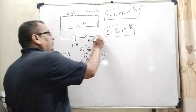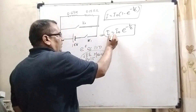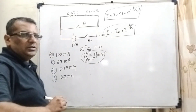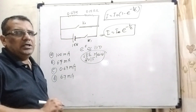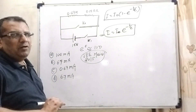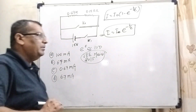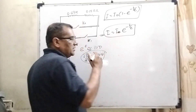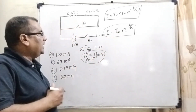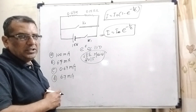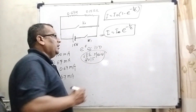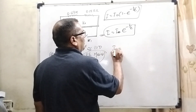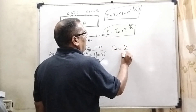So here we use the discharging formula. Firstly, we need I₀. What is the meaning of I₀? I₀ is the peak value — meaning the maximum current at the time when there is no inductance effect. So here firstly we have to find out I₀.